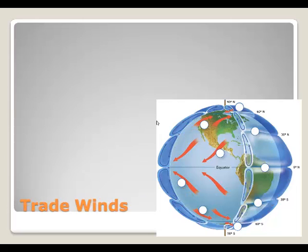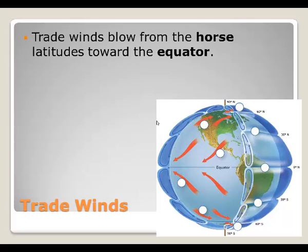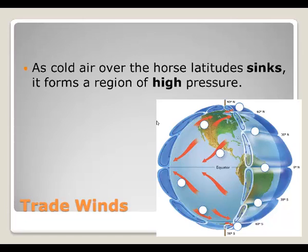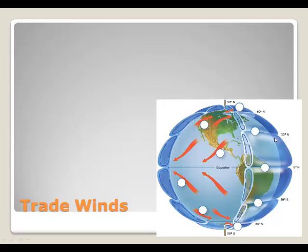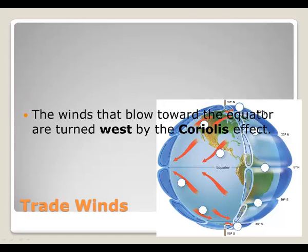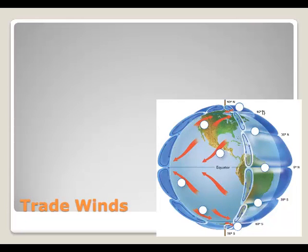The trade winds were named by sailors because they were used for trade. The trade winds blow from the horse latitudes towards the equator. As cold air over the horse latitudes sinks, it forms a region of high pressure, which causes surface winds to blow back towards the equator. Due to the Coriolis effect, these winds are deflected and turn west. The trade winds came from Europe toward the Americas in the Northern Hemisphere and were used for trade routes.